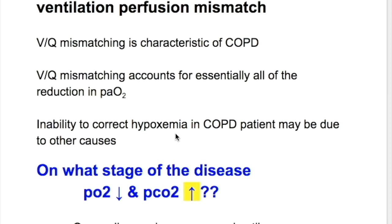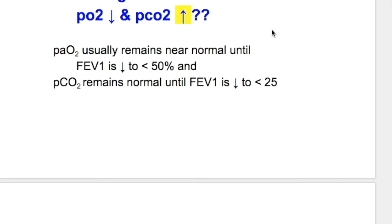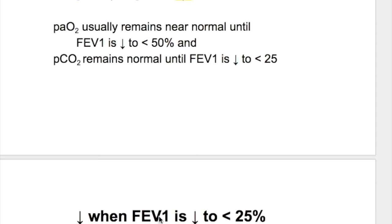If there is inability to correct hypoxemia in a COPD patient, it may be due to other causes. On what stage of the disease does arterial oxygen decrease and carbon dioxide increase? Arterial oxygen usually remains near normal until FEV1 is reduced to less than 50 percent. Carbon dioxide remains normal until FEV1 is reduced to less than 25 percent.